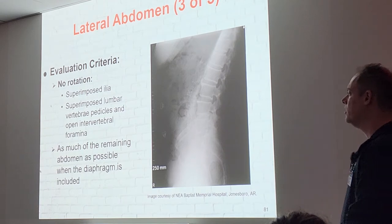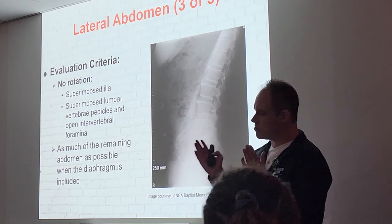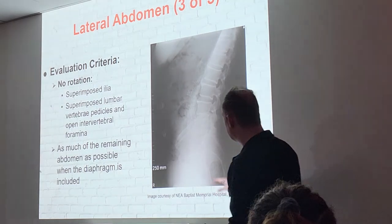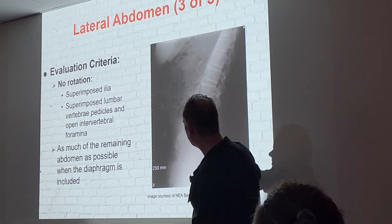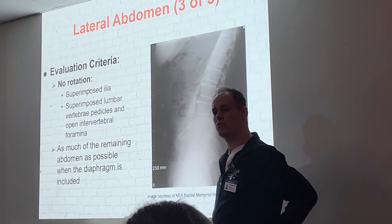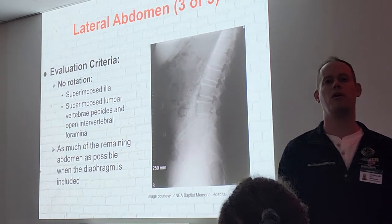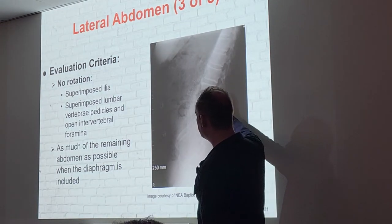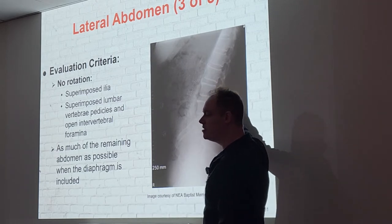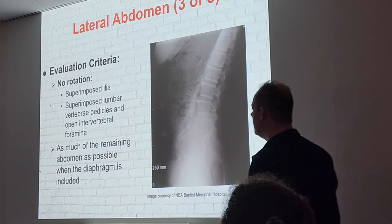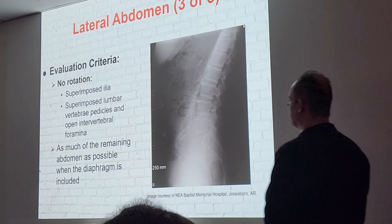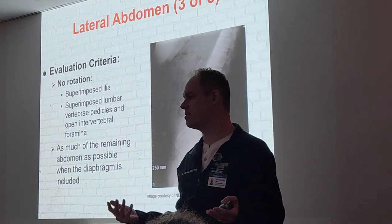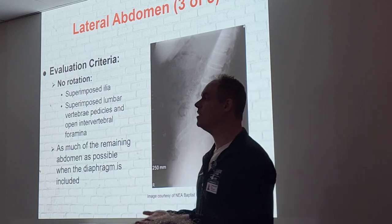Evaluation criteria: no rotation — achieved by stacking the knees on top of each other. We want superimposed ilia — if you see two separate ridges of the iliac crest the hips have rotated. We want superimposed lumbar vertebrae pedicles and open intervertebral foramina. Include as much of the abdomen as possible. Since the primary reason for this exam is foreign bodies, if you collimate too much you risk cutting off the foreign body and defeating the purpose of the exam entirely.